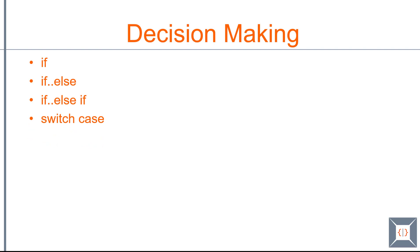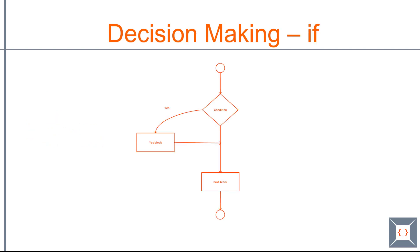Let's see how these work one by one. With an if statement you specify a condition, and if that condition is met it will execute a block of code. If the condition is not met then it will move on to the next block. Whatever you have inside the if block will be executed only if the condition is met.